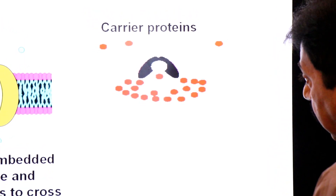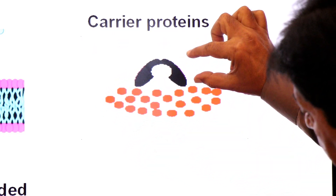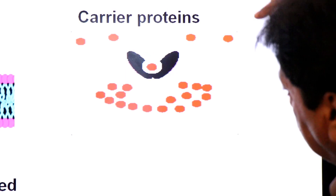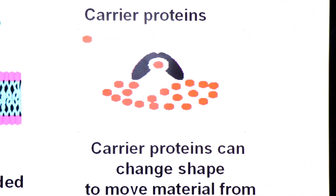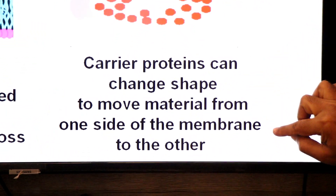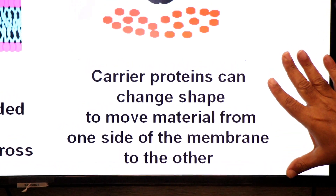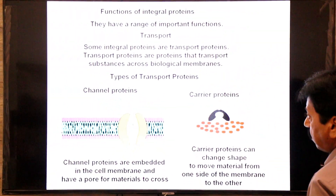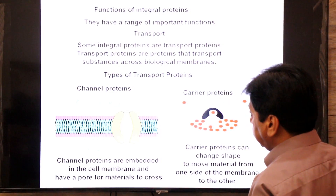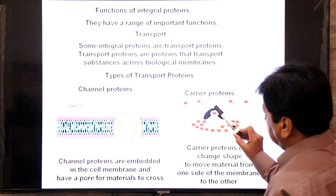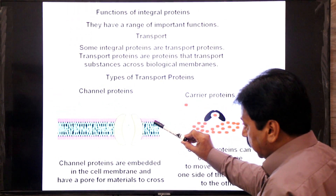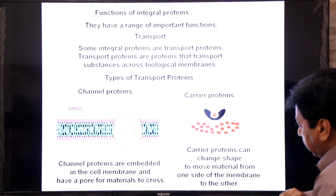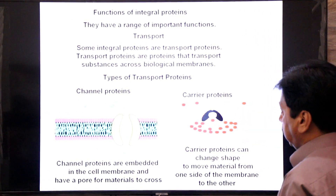The second type of transport proteins are carrier proteins. As shown in the animation, a carrier protein picks up a molecule from one side of the cell membrane, rotates or changes shape, then releases it on the other side. Carrier proteins can change their shape to move material from one side of the membrane to the other side.